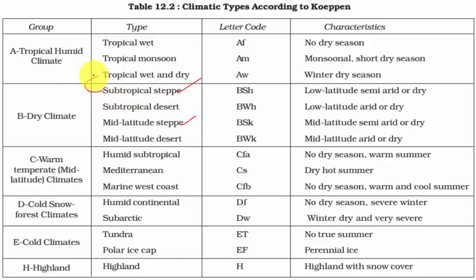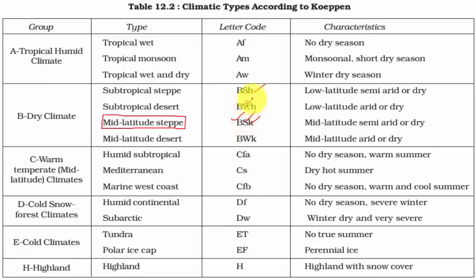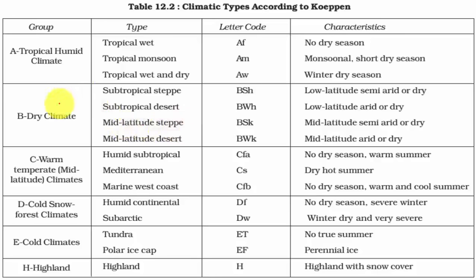Subtropical steppe closely resembles tropical wet and dry or savannah type of climate, whereas mid-latitude steppe has many variations from savannah grassland. Under the Köppen scheme, B stands for dry climate, S stands for steppe, and K stands for high latitude, while H stands for low latitude and W for dry type. Mid-latitude and subtropical deserts are arid, while subtropical and mid-latitude steppes are semi-arid, with rainfall between 25 to 75 cm — 25 to 60 cm in the northern hemisphere and 25 to 75 cm in the southern hemisphere.